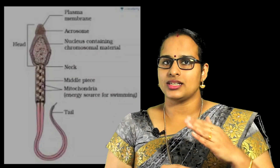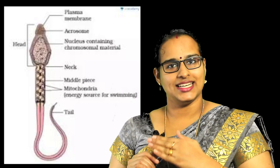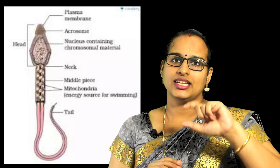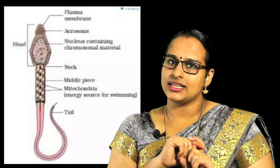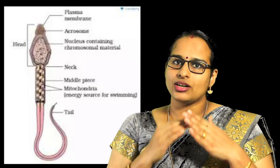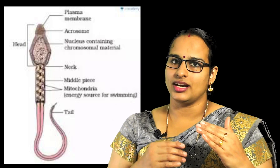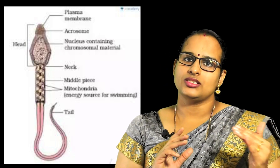We know the structure of sperm: it has a head, neck, middle piece, and tail. In the head region there is a special structure called the acrosome, located in the anterior part of the head. The acrosome releases certain enzymes that help the sperm penetrate the ovum.